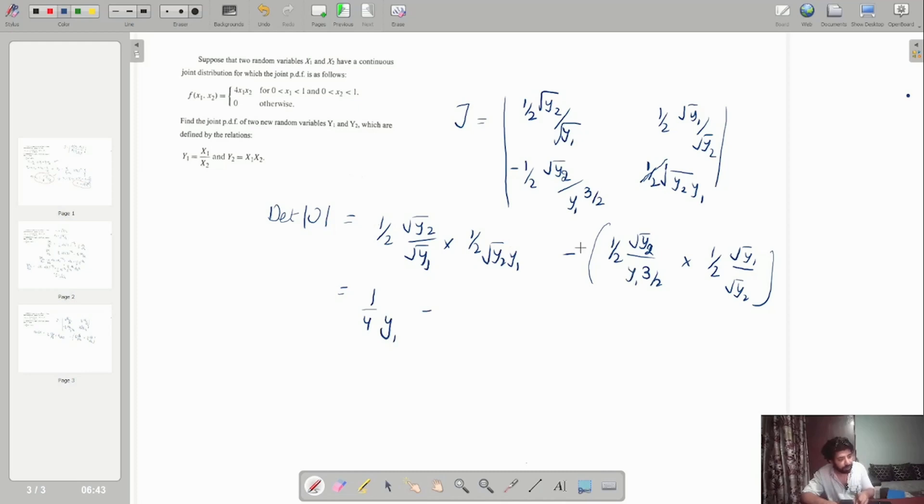Now what we have to do is find out the determinant of J. This equals 1 over 4 times y1 over y2 minus the product of the off-diagonal terms, which should give me 1 over 4y1 plus 1 over 4y1, which should be 2 over 4y1, which is 1 over 2y1. That is the value of the determinant.